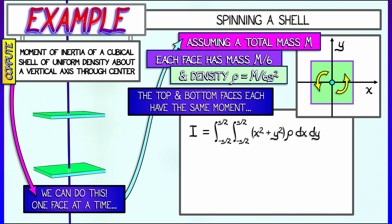Integrating that is not so bad. x squared integrates to x cubed over 3 times y. y squared integrates to y cubed over 3 times x. Multiply this by ρ and evaluate as x and y go from minus s over 2 to plus s over 2. A little bit of algebraic simplification gives us ρ s to the fourth over 6.